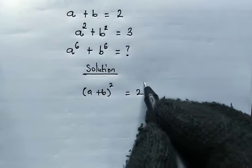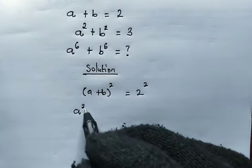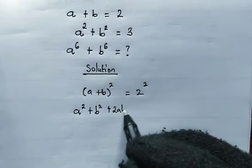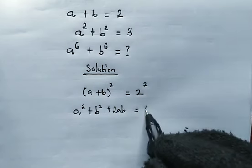So we're going to square both sides. Then from the left, this equals a squared plus b squared plus 2 times a times b. This equals 2 squared, which is 4.